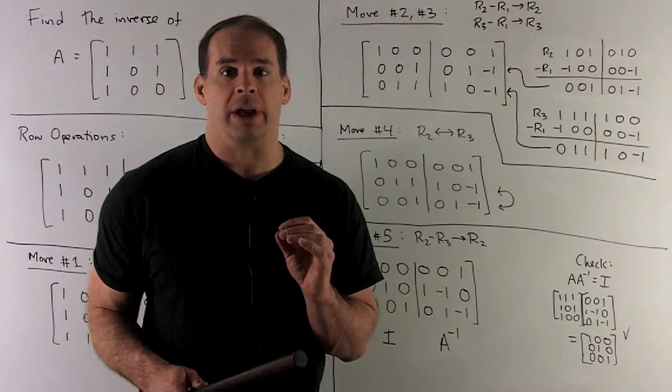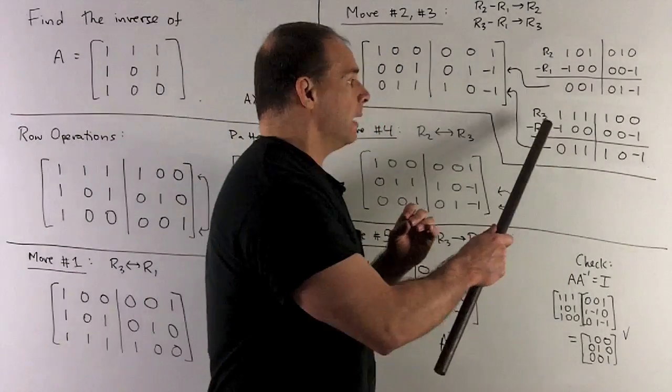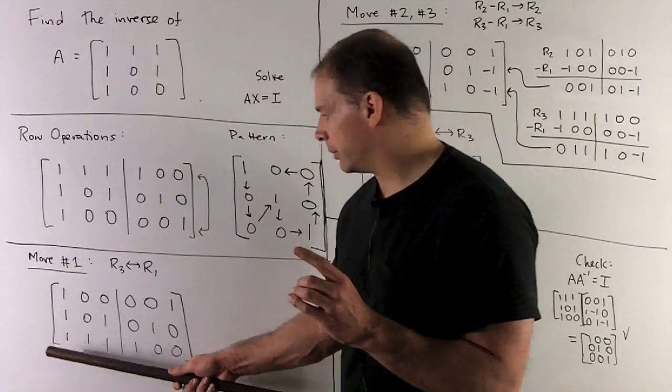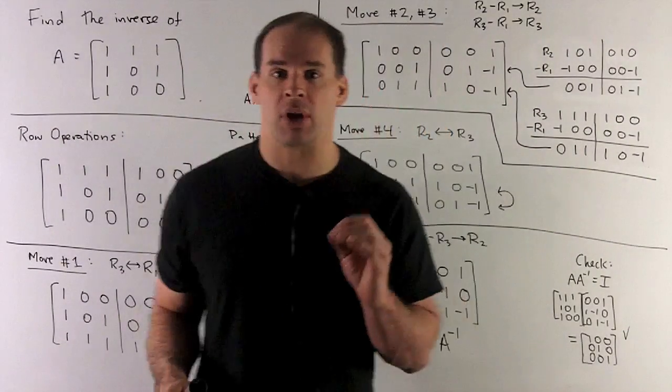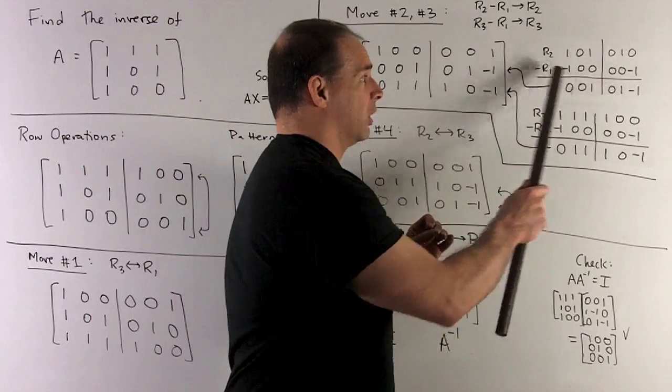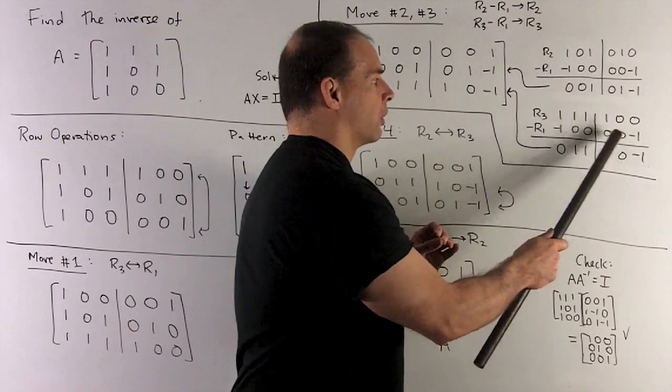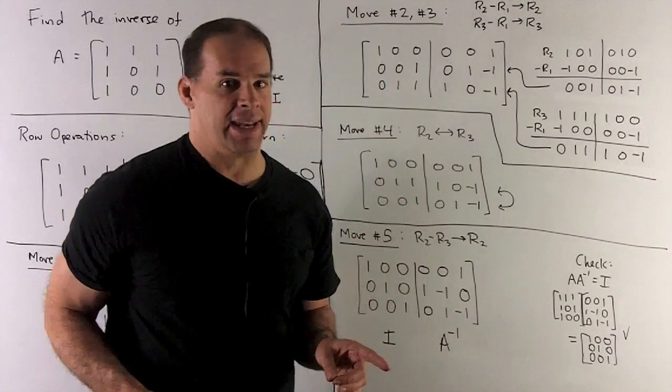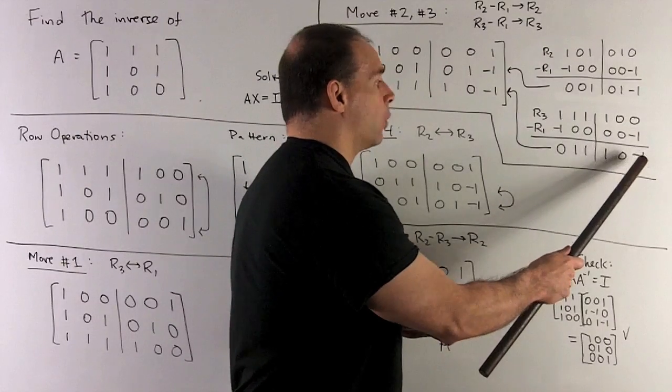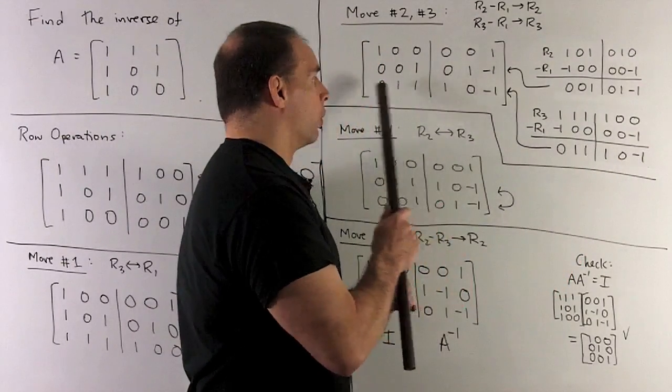Same idea applies for row 3. We put in our row 3: 1, 1, 1, 1, 0, 0, coming from here. Subtract off row 1, same subtract row 1 as we had in the previous step. So I have minus 1, 0, 0, 0, 0, minus 1. We add down, that gives me 0, 1, 1, 1, 0, minus 1. That's my new row 3.